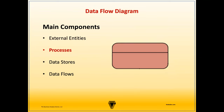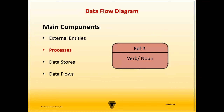A process is an activity, which can be manual or automated, that transforms incoming data into outputs. All processes must have at least one data input and one data output. There are two key considerations for labeling processes: a process description must be in an active verb-noun format, and a reference number is placed above the description to indicate the level of the diagram and the process within the function. For example, 'Order Item' has reference number 1.0, indicating it is the first process at the level 0 diagram.